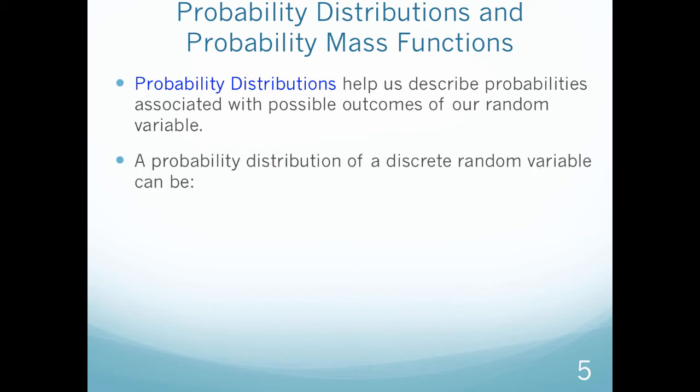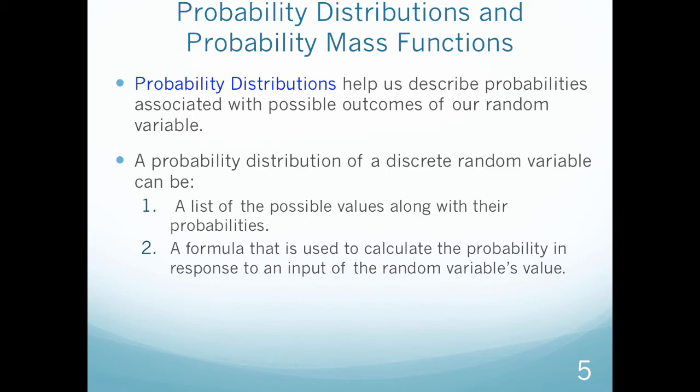A probability distribution of a discrete random variable can be either a list of possible values with their probabilities, or a formula that's used to calculate the probability in response to an input of the random variable's value. We will see both of these in different scenarios.